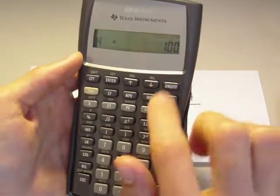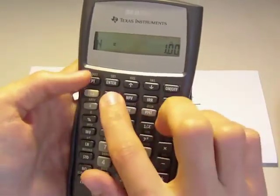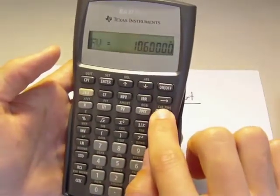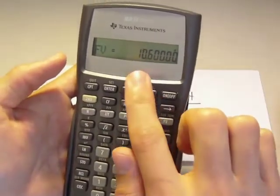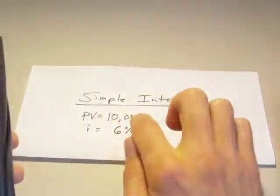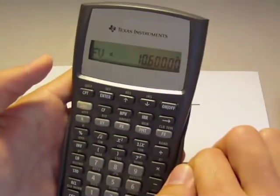Since with simple interest, we're only dealing with one period. And then once we're ready, we click the Compute button right here. And then we click Future Value. The future value is going to be $10,600. So that's how you calculate simple interest on one of these BA2 pluses.